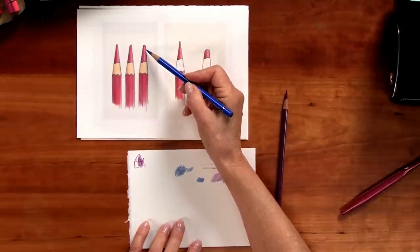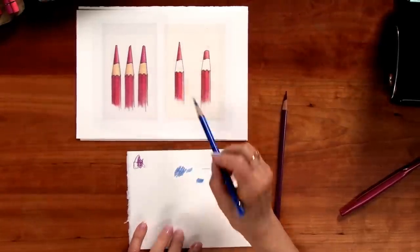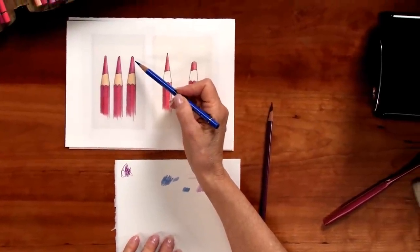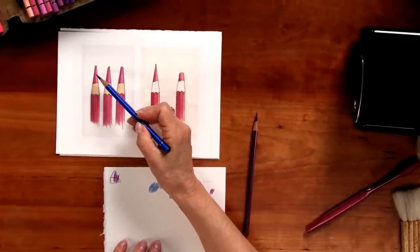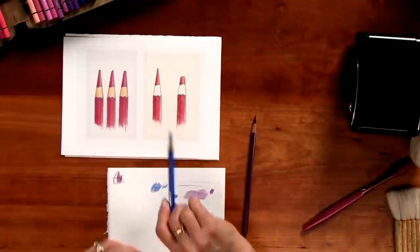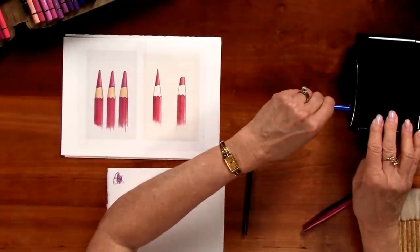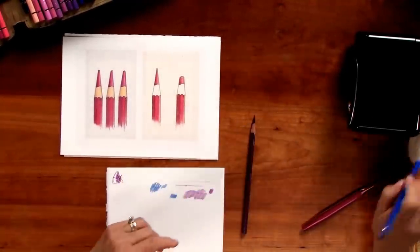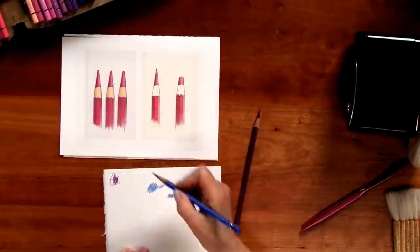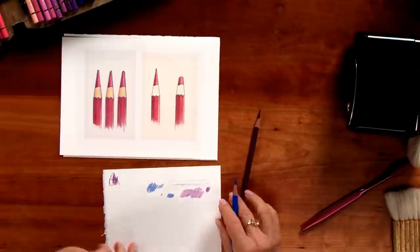I need now to put the pencil back into the sharpener and do what my husband told me was refreshing the point. I'm repointing the pencil, but I'm also bringing that little flat edge back again. Now I've sharpened the pencil, cleaned it off, and I'm ready to go again.